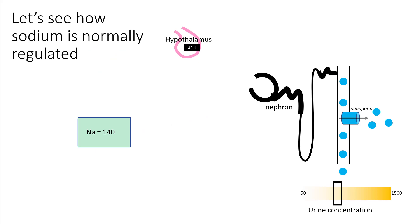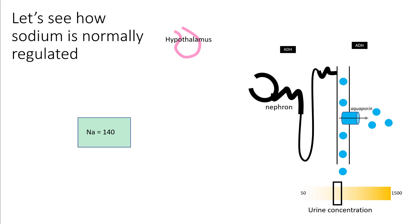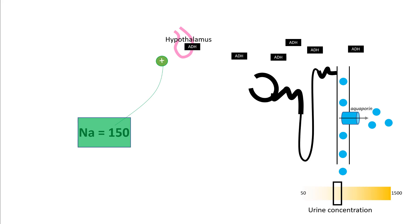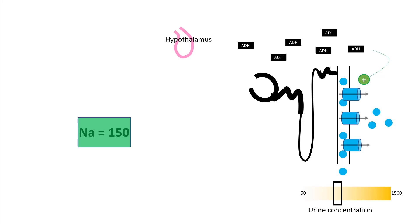Let's see how sodium is normally regulated. Here we have a sodium of 140, the hypothalamus which secretes ADH, a nephron with aquaporin molecules — the blue dots represent water — and urine concentration in the lower right corner. Normally you always have some ADH when sodium is around 140. If sodium increases to 150, this stimulates the osmoreceptors in the hypothalamus and stimulates ADH release. Increased ADH stimulates aquaporin molecules in the collecting ducts and you absorb more free water.